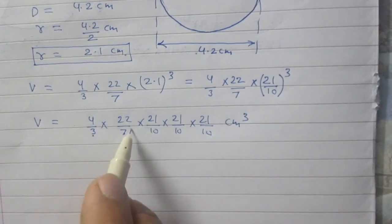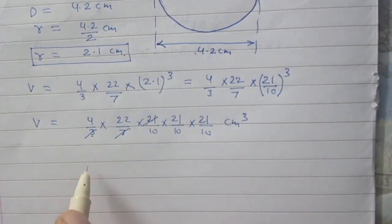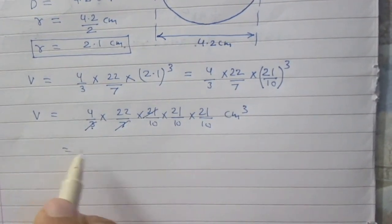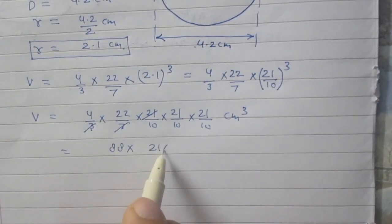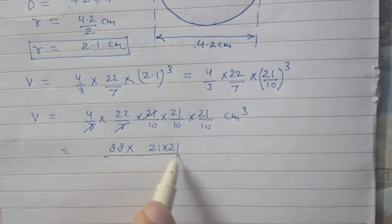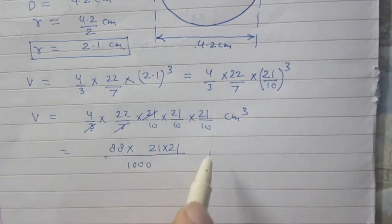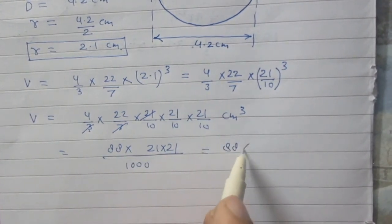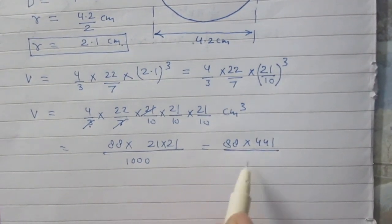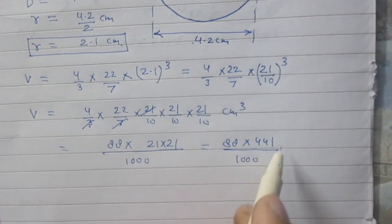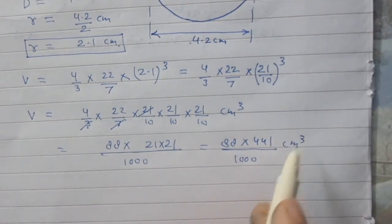7, 3 are 21. So 7 and 3 both can be reduced by 21 in the numerator. You will get 88 which is 4 into 22. 21 into 22 upon 1000 or 88 in multiplication with 441 which is square of 21 upon 1000 centimeter cube.